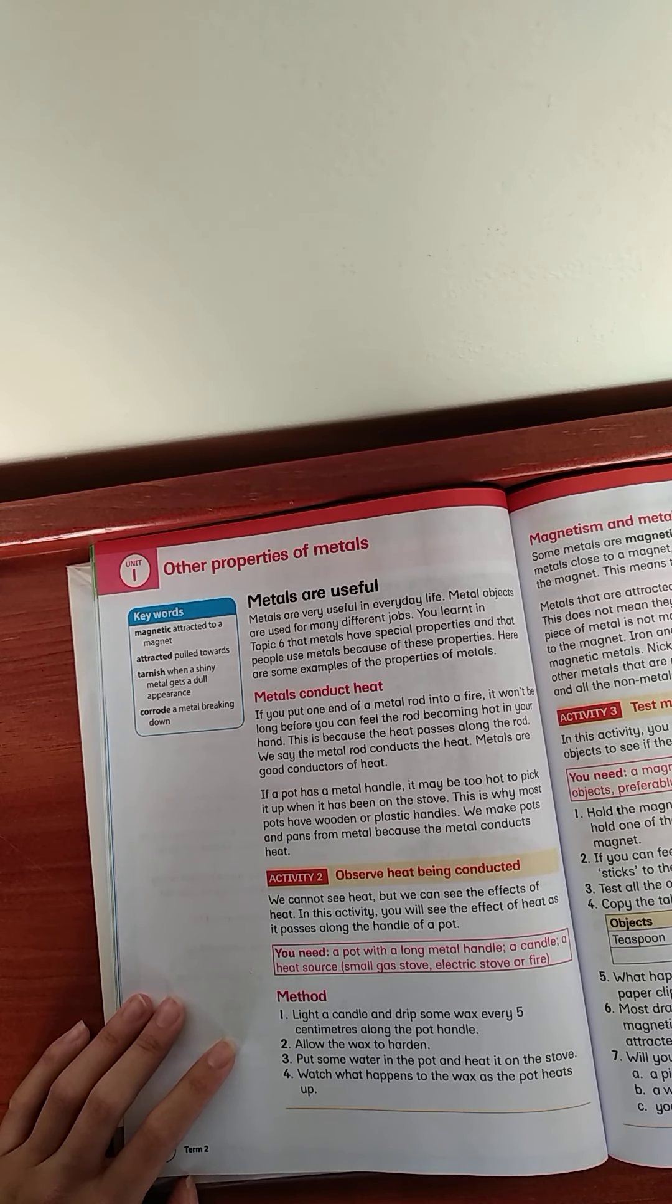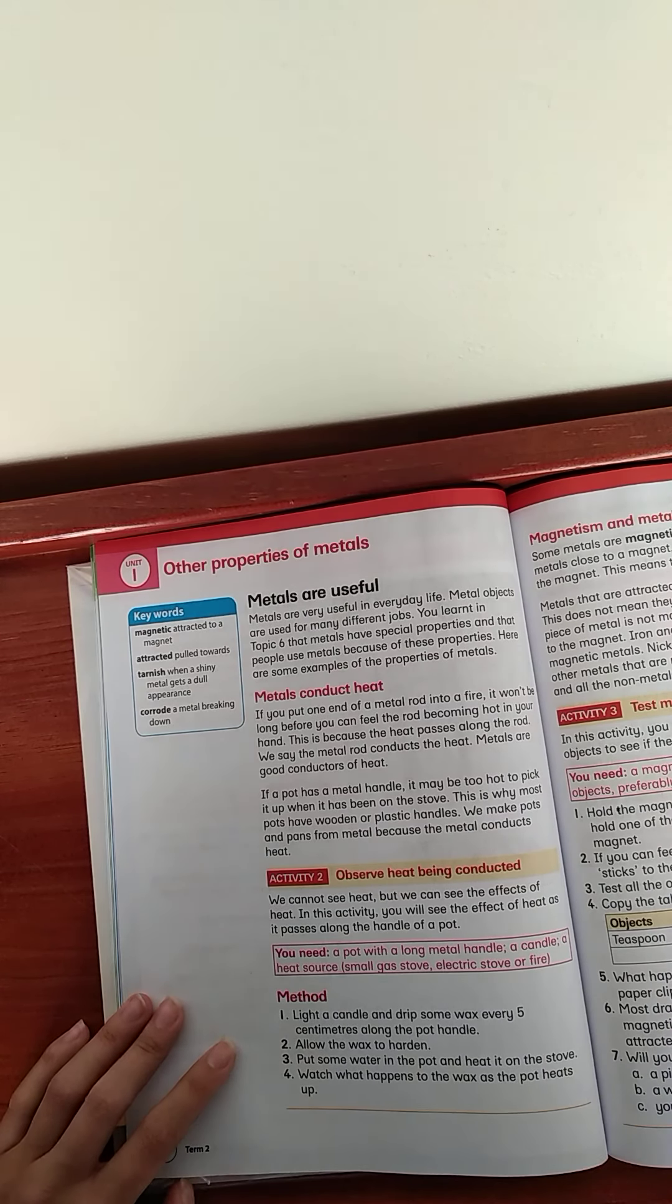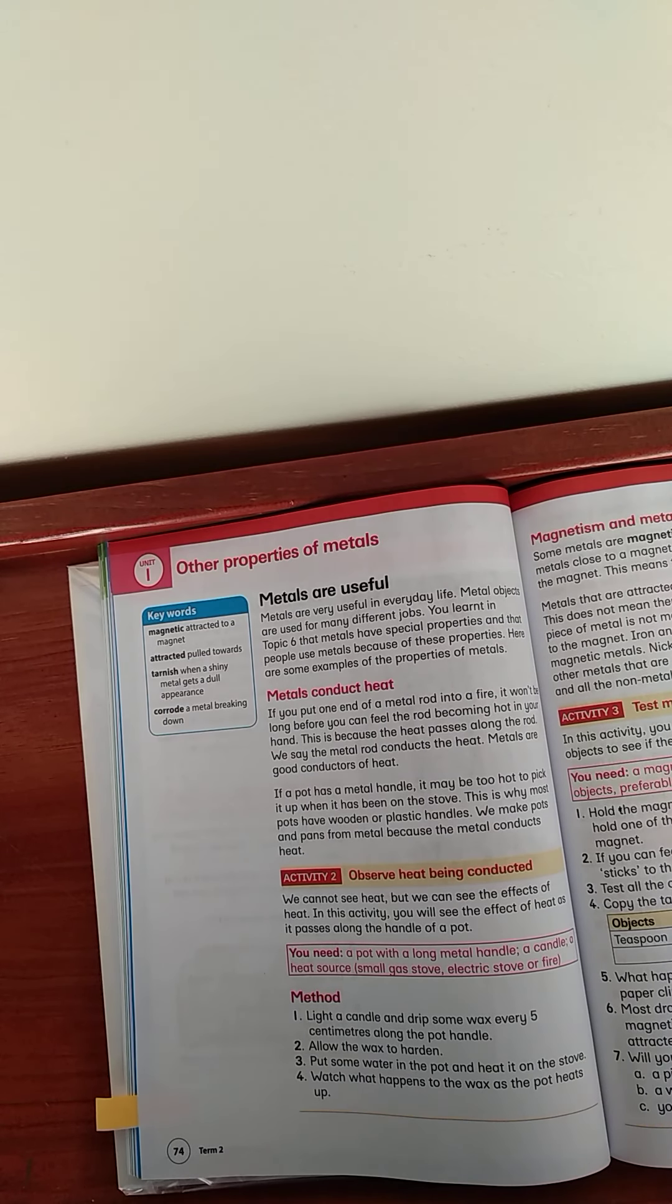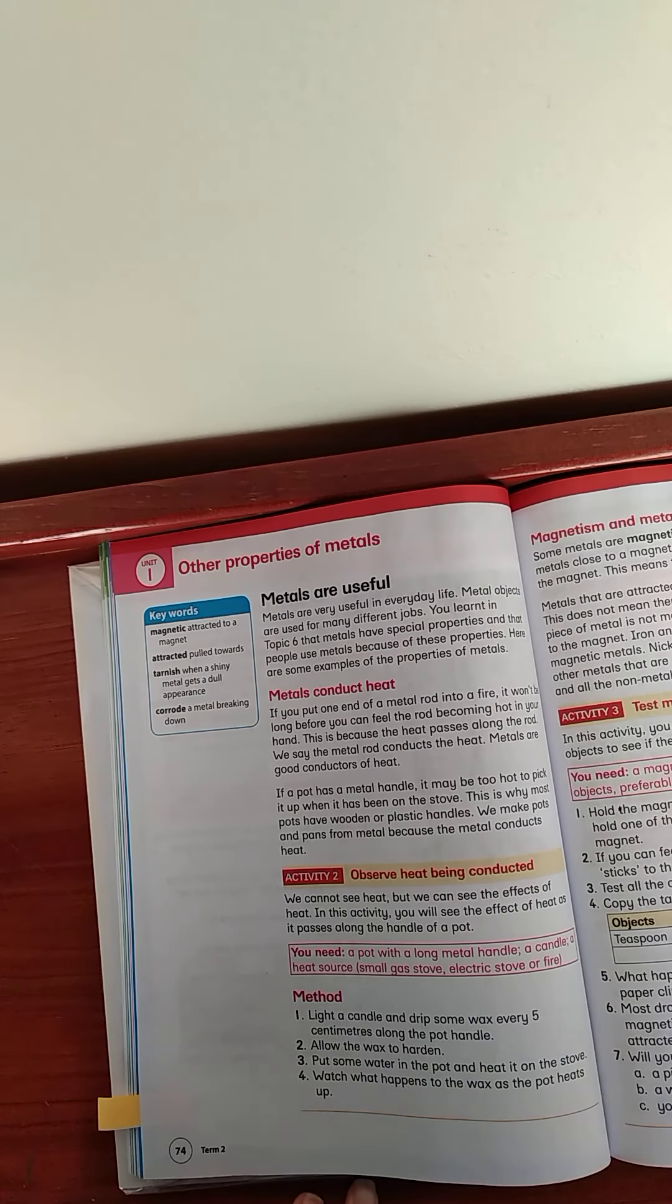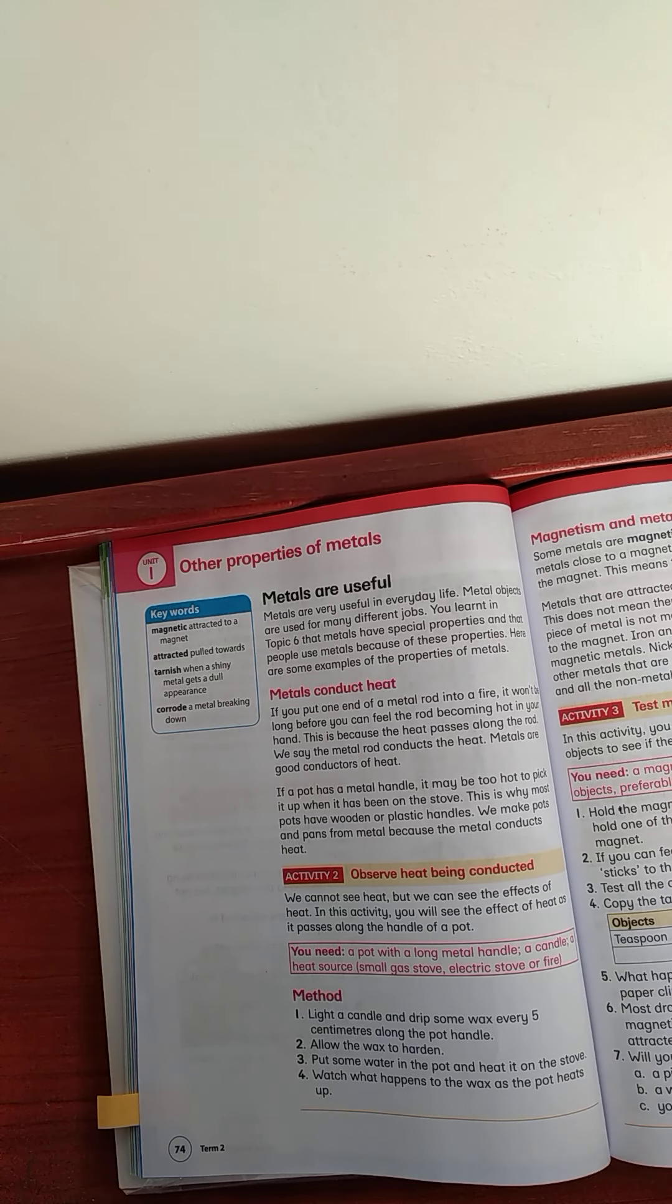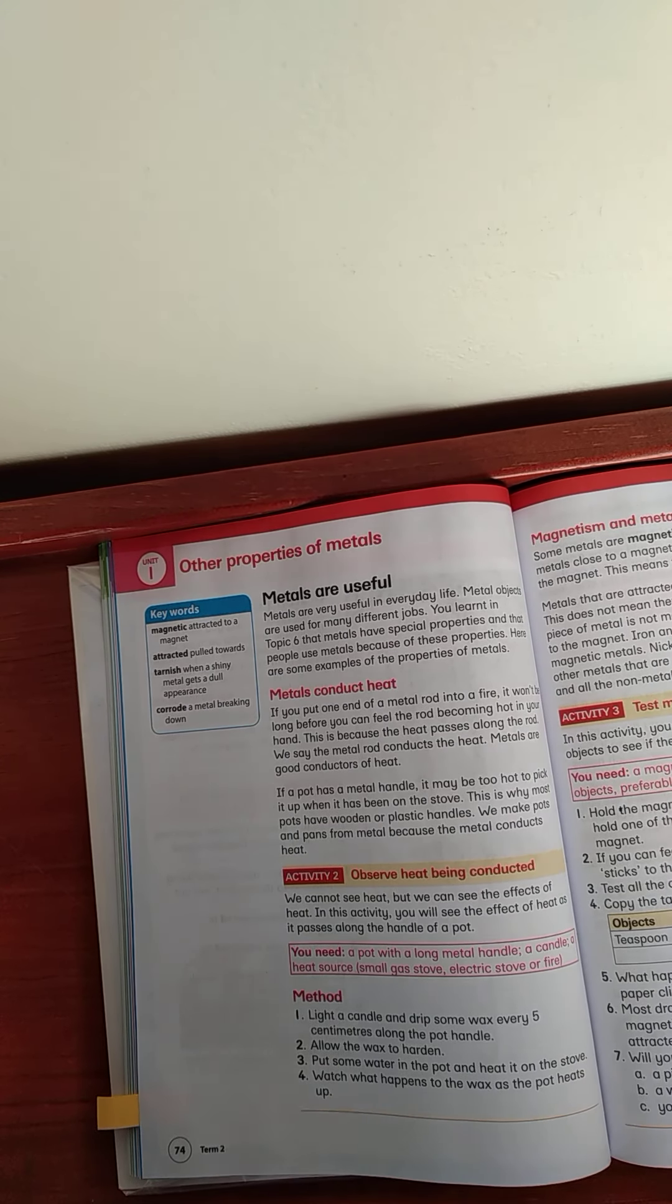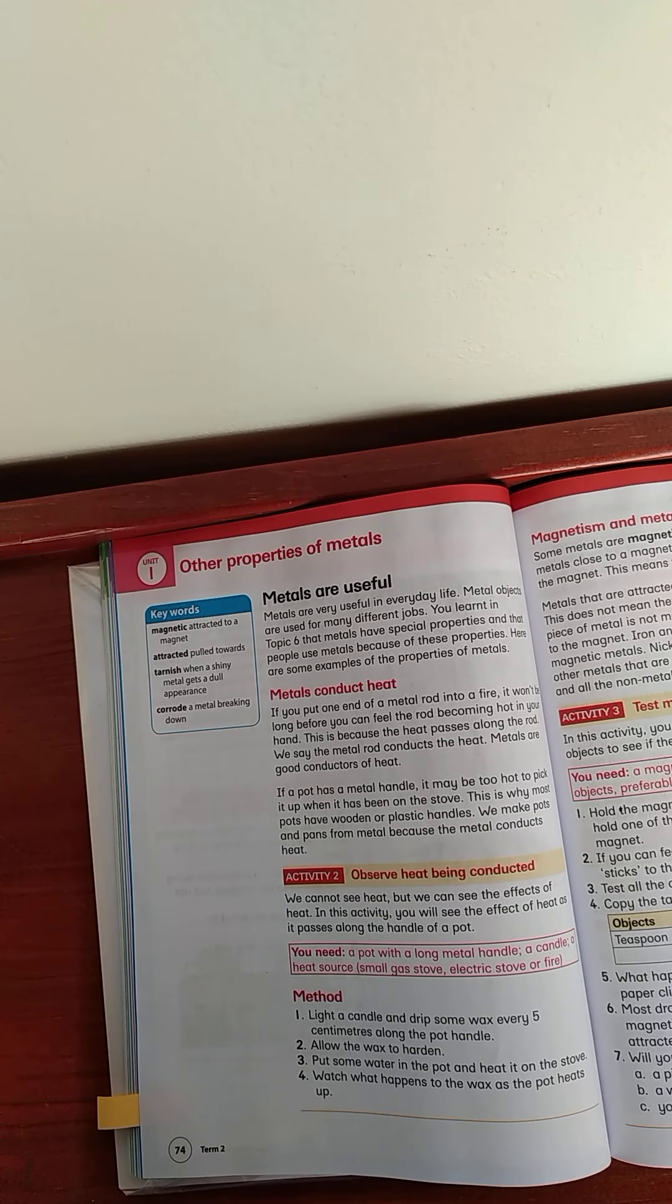So you will need a pot with a long metal handle, a candle, a heat source like a small gas stove or electric stove or fire. Light a candle and drip some wax every five centimeters along the pot handle. Allow the wax to harden and put some water in the pot and heat it on the stove. Watch what happens to the wax as the pot heats up. You can only do this if you have these available and if your mom allows you to. But basically what's going to happen is the wax is going to melt because you can then see how the heat is conducted.